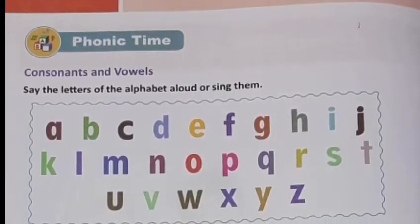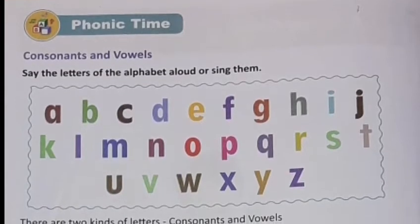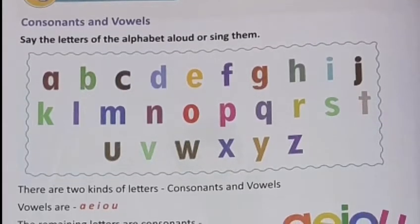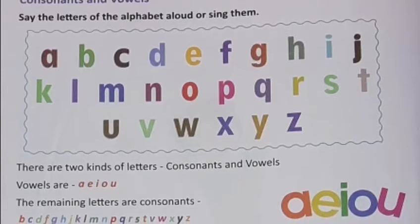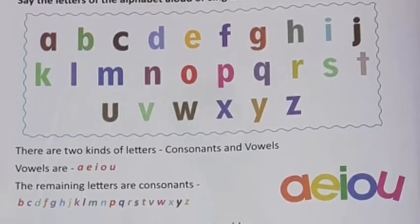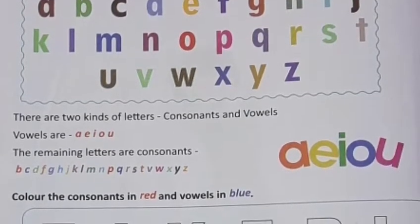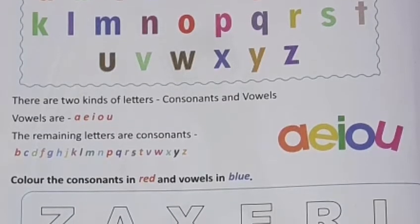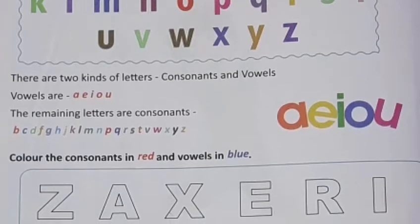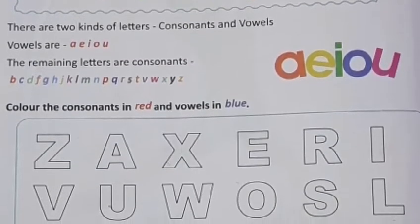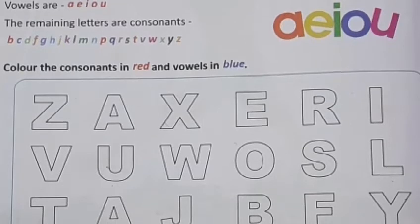Now page number 8, Phonic Time. In this we will learn about the relationship between letters and sounds. As you can see, consonants and vowels are given. Say the letters of the alphabet aloud, or sing them. There are two kinds of letters: consonants and vowels.